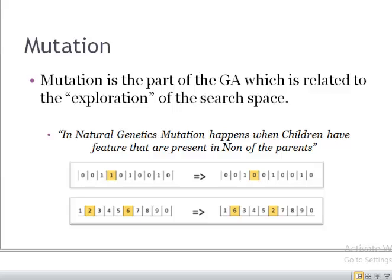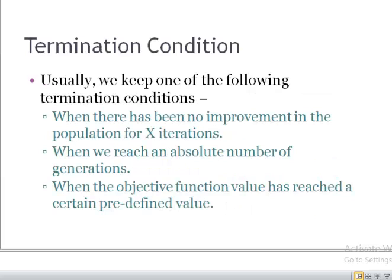We keep repeating the steps of selection, crossover, and mutation in every generation. The question then arises: when do we stop? The most frequently used termination condition is when there is no improvement in the objective function — if we keep getting the same value of the objective function with different solutions, we stop, and the current set of solutions is considered the optimal solution.